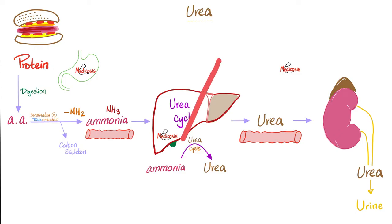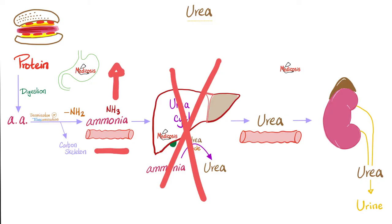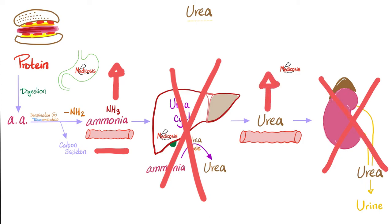If I have liver failure, everything before the liver will accumulate — I will suffer from hyperammonemia, which is toxic to the brain and can cross the blood-brain barrier. If I have kidney failure, I get uremia, not hyperammonemia. Anytime you block a path, the substance before it will go up.